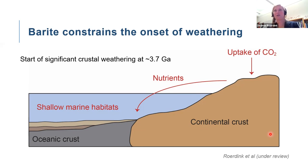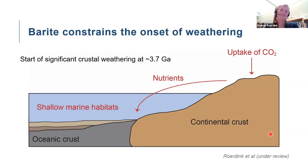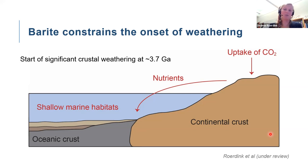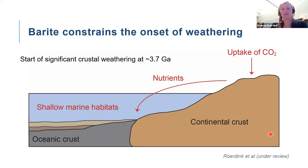If that extrapolation is correct, it suggests life may have already been supplied with nutrients from weathering in the earliest Paleoarchaean, perhaps explaining the evidence for microbial activity seen in the barite sulfur isotope record. Continental weathering would also have affected CO2 uptake through subaerial weathering and provided habitats for early life in shallow marine environments, creating epicontinental seas.